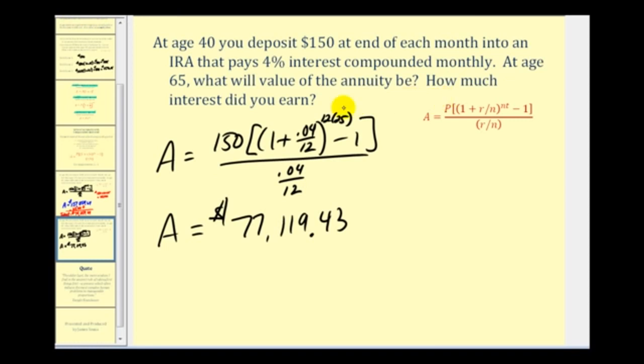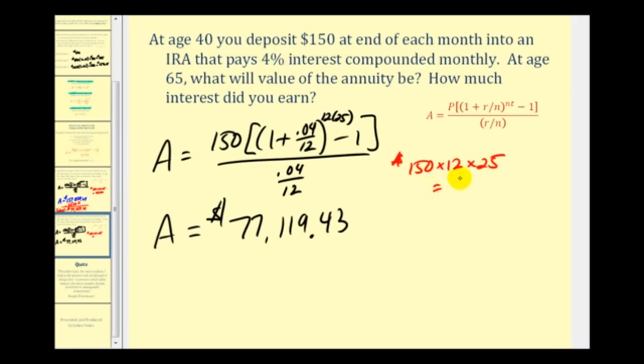So let's go ahead and determine the total interest earned. So the total amount deposited would be one fifty, per month, so times twelve, for twenty-five years. One fifty times twelve times twenty-five, is equal to forty-five thousand dollars. This is the total amount deposited over the twenty-five years. So if we take the balance, and subtract out the amount that we deposited, that'll tell us the total interest earned. We're going to have thirty-two thousand, one hundred and nineteen dollars and forty-three cents.